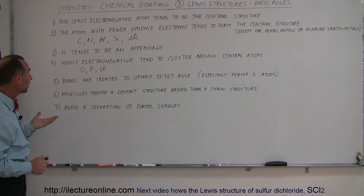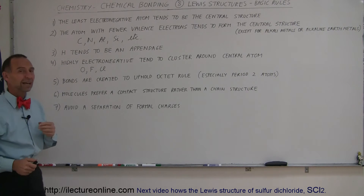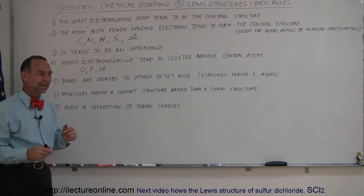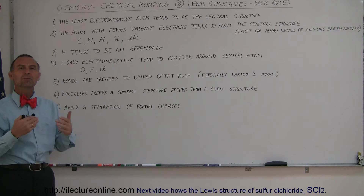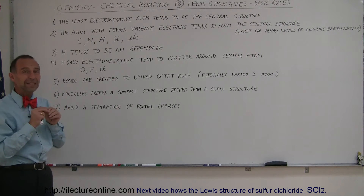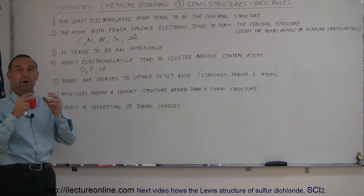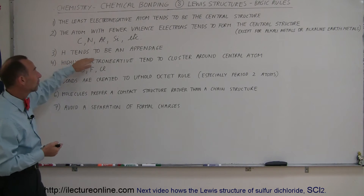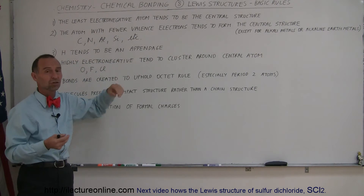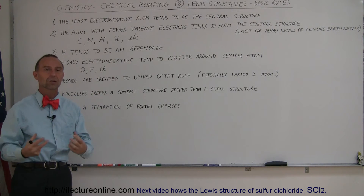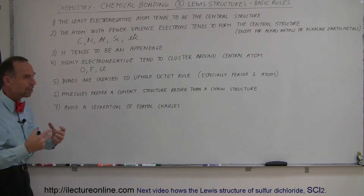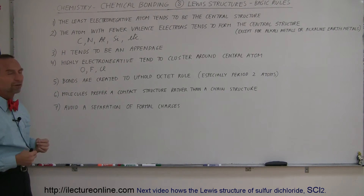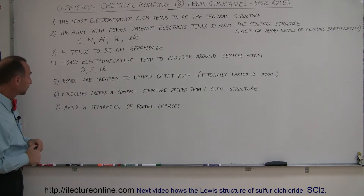Rule number three: hydrogen, since it only has two valence electrons to begin with, it's not a good atom to be in the center of a molecule. So hydrogen tends to become just an appendage — it tends to be on the outside of the molecule, just added on with a single bond to whatever atom it can.